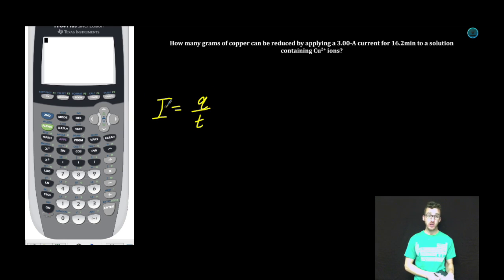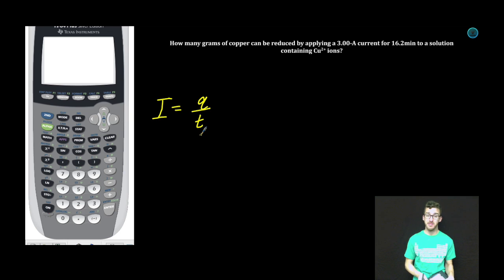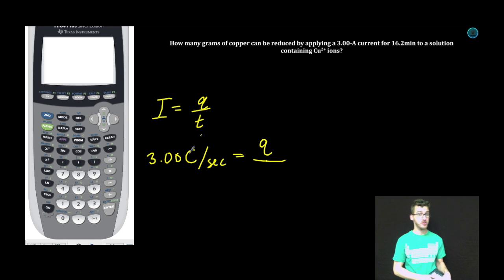Again, I is our current and current is essentially what charge has flown through our cell over what time in seconds. We know that we have a 3.00 amp current, which I'm going to simply write as coulombs per second. We want to know what amount of charge has passed through our cell in 16.2 minutes when we have a 3.00 amp current. Well, it's important to know we define amps as coulombs per second or charge per second. So before I go any further, I'm going to convert my 16.2 minutes to seconds.